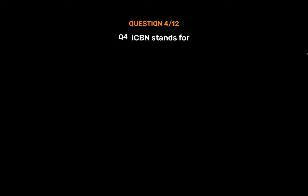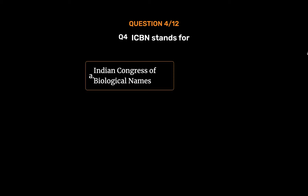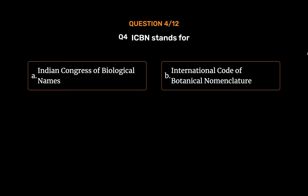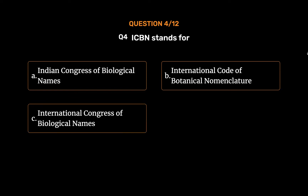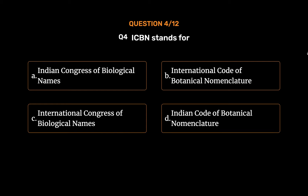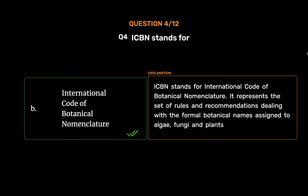Question No. 4. ICBN stands for. Option A: Indian Congress of Biological Names. Option B: International Code of Botanical Nomenclature. Option C: International Congress of Biological Nomenclature. Option D: Indian Code of Botanical Nomenclature. The correct answer is Option B: International Code of Botanical Nomenclature. ICBN stands for International Code of Botanical Nomenclature. It represents the set of rules and recommendations dealing with the formal botanical names assigned to algae, fungi and plants.